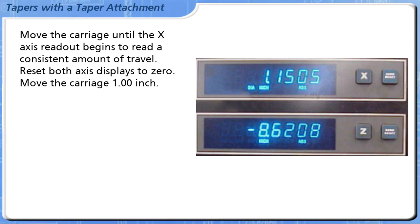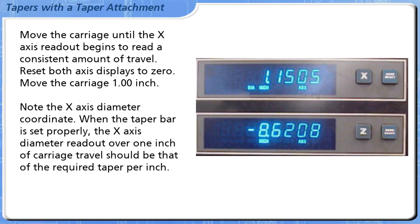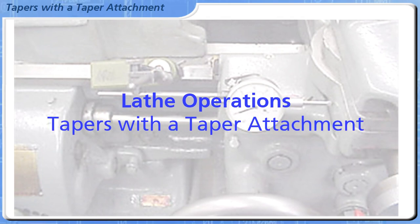Move the carriage 1.00 inch. Note the x-axis diameter coordinate. When the taper bar is set properly, the x-axis diameter readout over 1 inch of carriage travel should be that of the required taper per inch. You have completed this lathe operations module on tapers with the taper attachment.